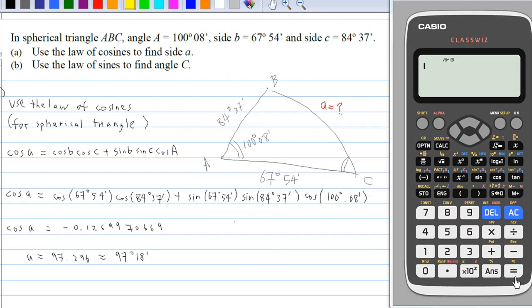Now, substituting b, the side opposite angle B here is 67 degrees 54 minutes, and cosine of angle C is 84 degrees 37 minutes, plus sine b is 67 degrees 54 minutes, and sine c is 84 degrees 37 minutes, times cosine of angle A, which is 100 degrees 8 minutes.